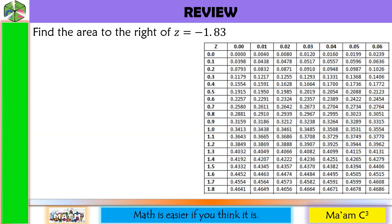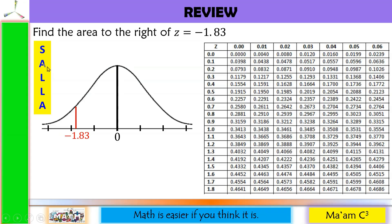Let's have our table and our steps. Step 1 is to sketch the normal curve. Let us label it with our Z value here, negative 1.83. This is negative 1, negative 2, then somewhere here is negative 1.83.